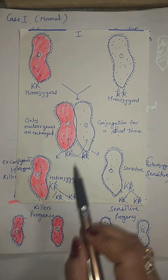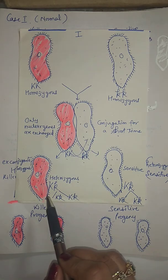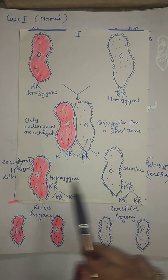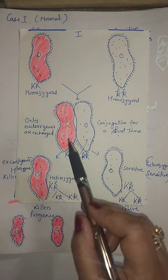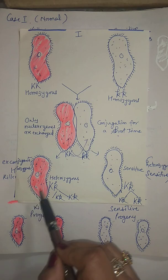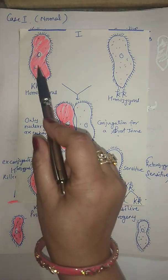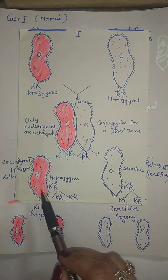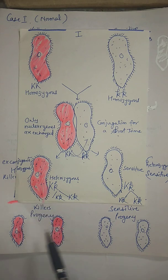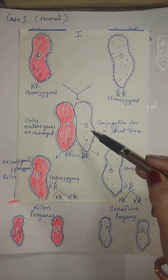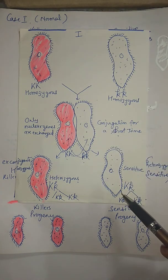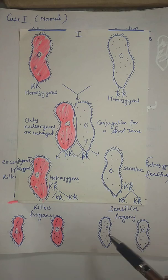After separation, the ex-conjugants become heterozygous Kk. The ex-conjugant that acquired K and retained kappa particles — shown by pink color — will produce killer progeny upon binary fission. The ex-conjugant with no kappa particles — shown by white cytoplasm — will produce a sensitive progeny after binary fission.